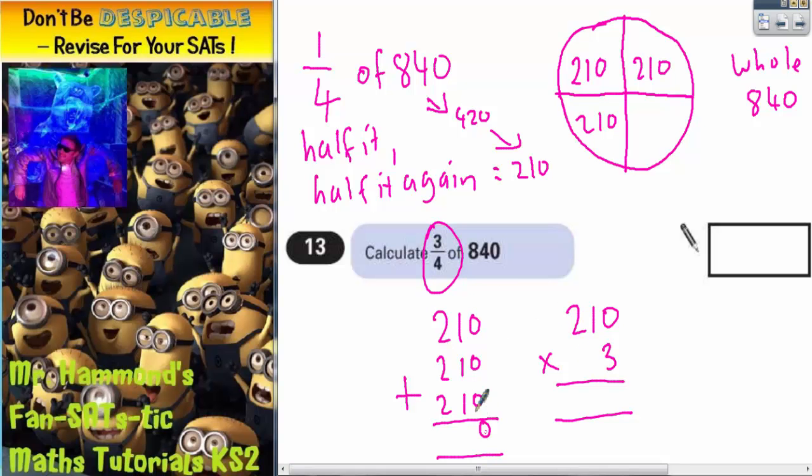0 plus 0 plus 0 is 0. 1 plus 1 plus 1 is 3. 2 plus 2 plus 2 is 6. So, it looks as though the answer is 630.